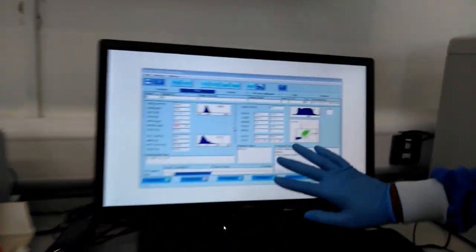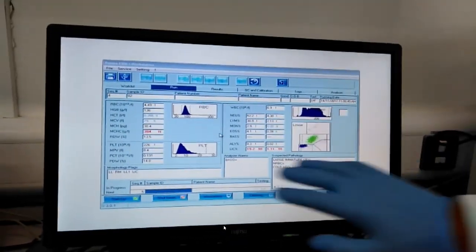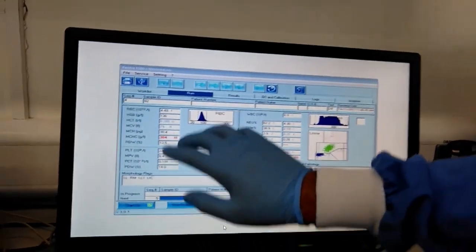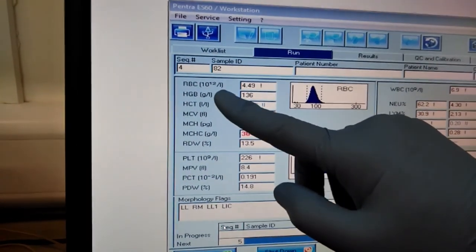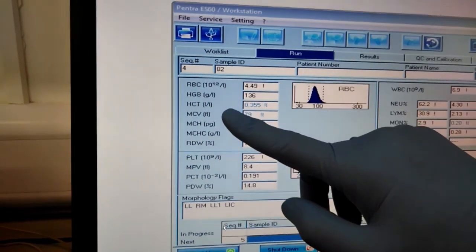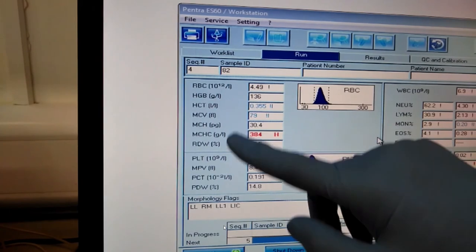This is the screen after completing the run. You can see the various parameters that have been completed, including red blood cell count, hemoglobin concentration, hematocrit, mean cell volume, and other parameters.